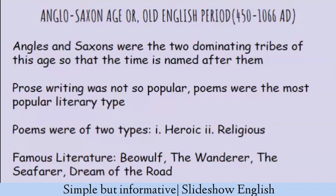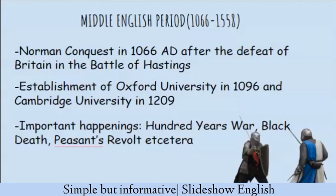After the Old English or Anglo-Saxon period, we have the Middle English age, and it starts with the Norman Conquest in 1066 AD. This year is very important from an academic point of view — never forget that the Norman Conquest occurred in 1066. With this event the Middle English period begins, which ends approximately in 1558.